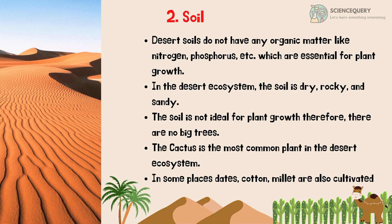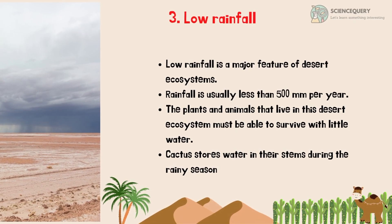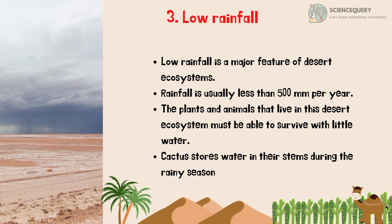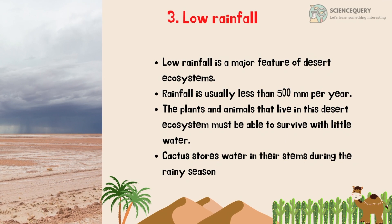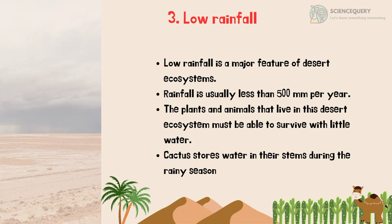In some places, date, cotton and millet are also cultivated. The third abiotic factor is low rainfall, which is a major feature of desert ecosystems. Rainfall is usually less than 500 mm per year. The plants and animals that live in the desert ecosystem must be able to survive with little water. Cactus stores water in their stems during the rainy season.